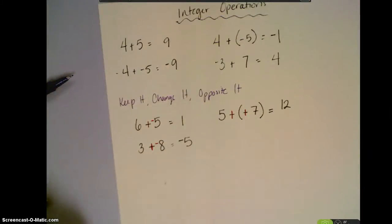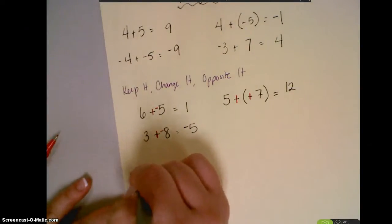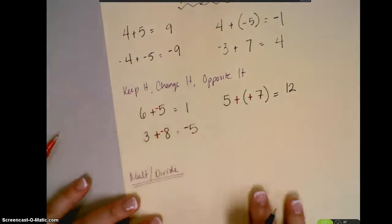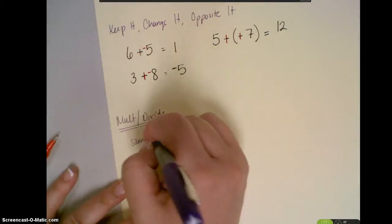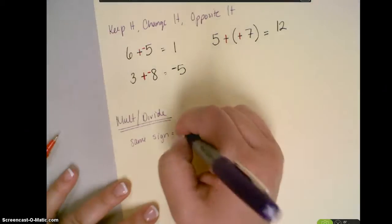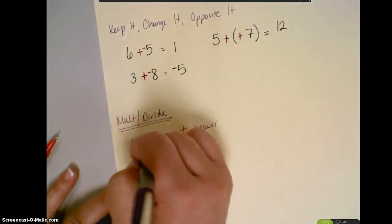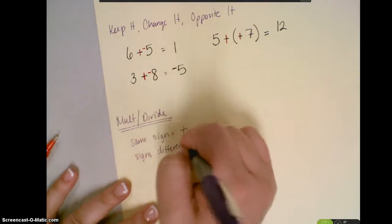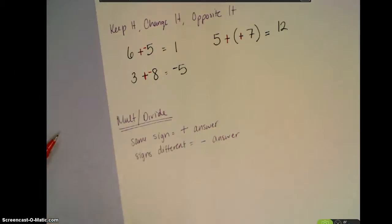For multiplication and division, the rules are the same for both. If the signs are the same, it's going to be a positive answer. If the signs are different, it's going to be a negative answer. Other than that, you just do what you would normally do.